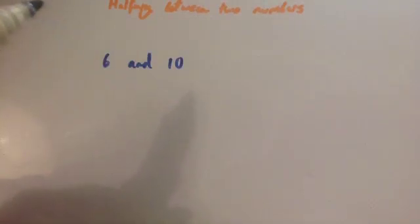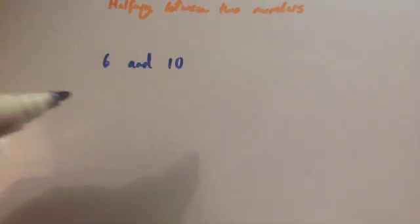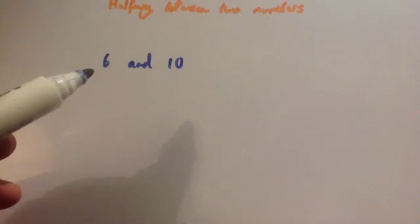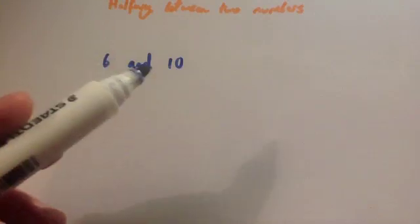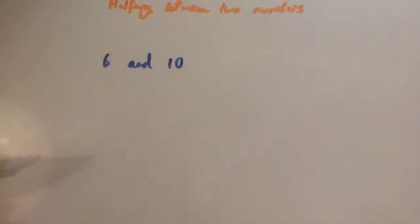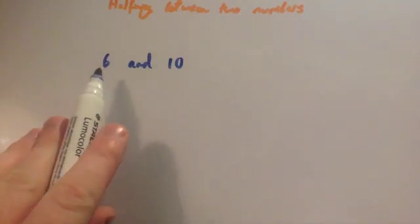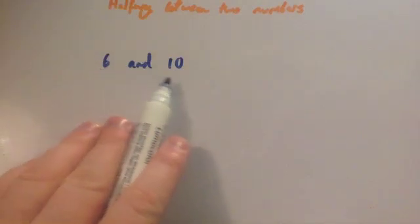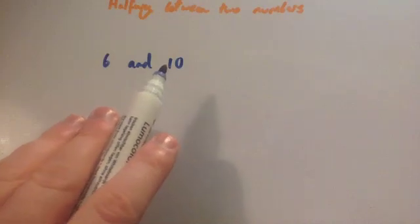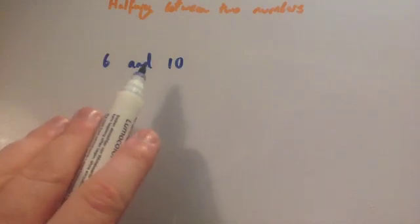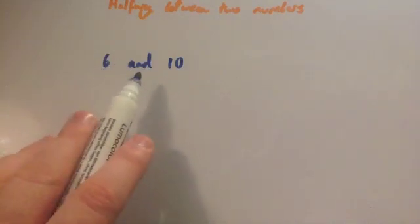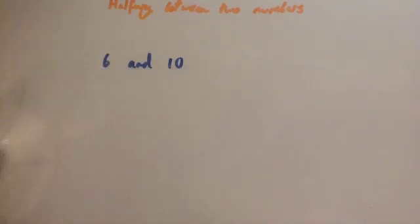This video is on finding halfway between two numbers. If a question said what's the number halfway between six and ten, there's lots of different ways to do this. Some people say well there's four between them, half of four is two, and then add the two on to six to get eight. Some people count up to find the middle number.